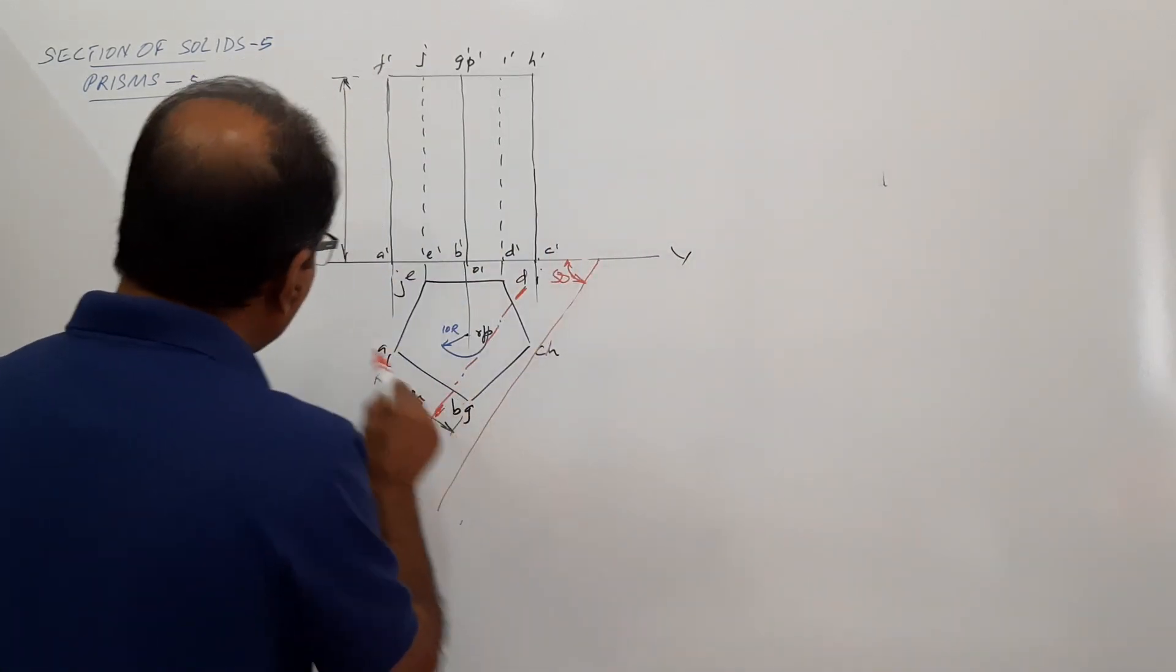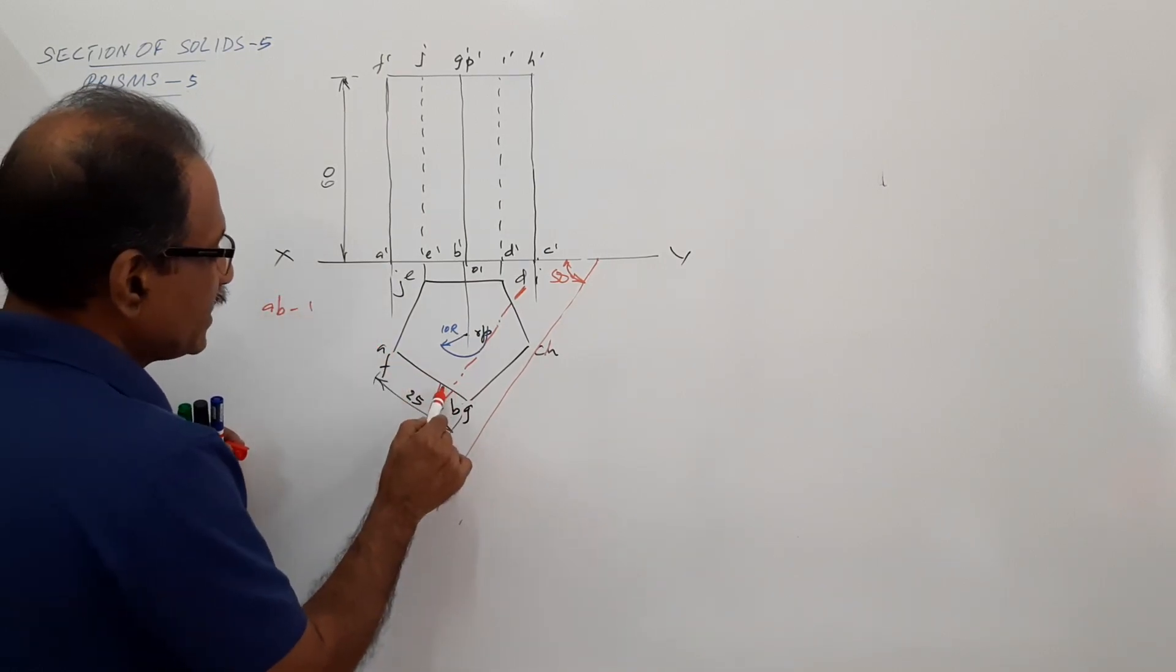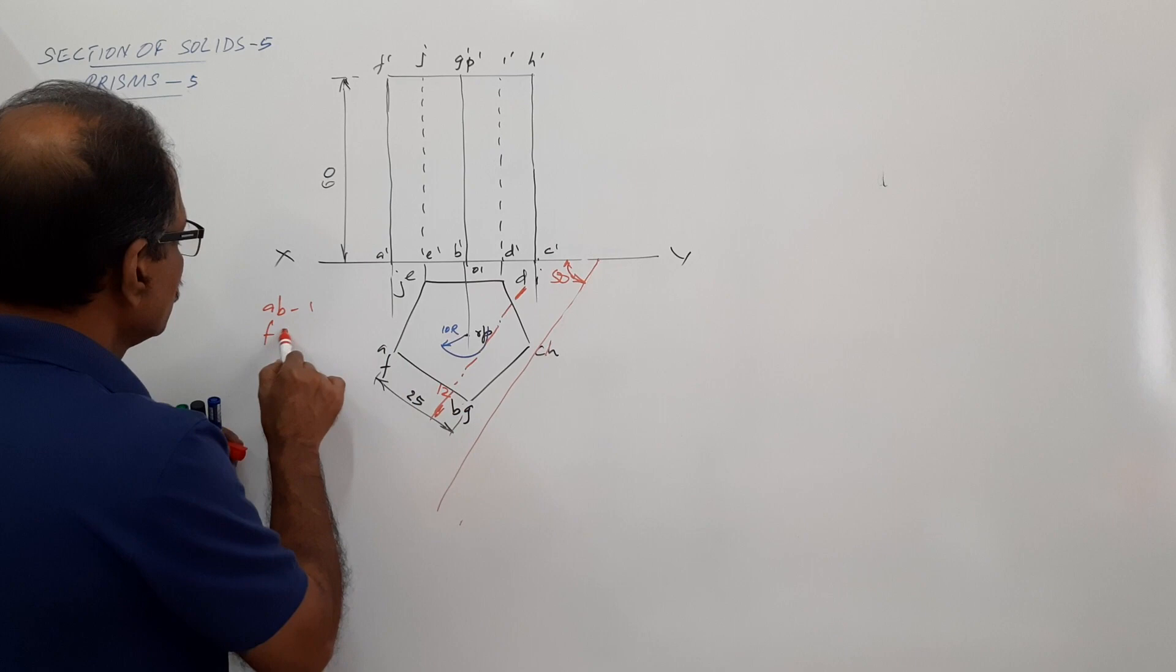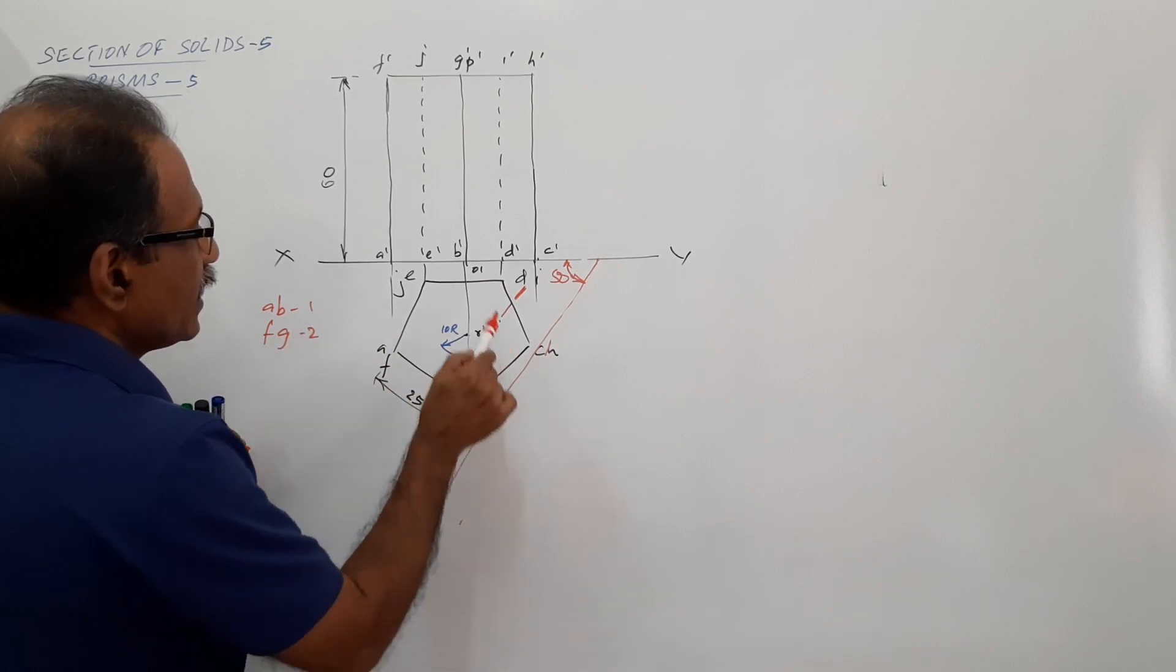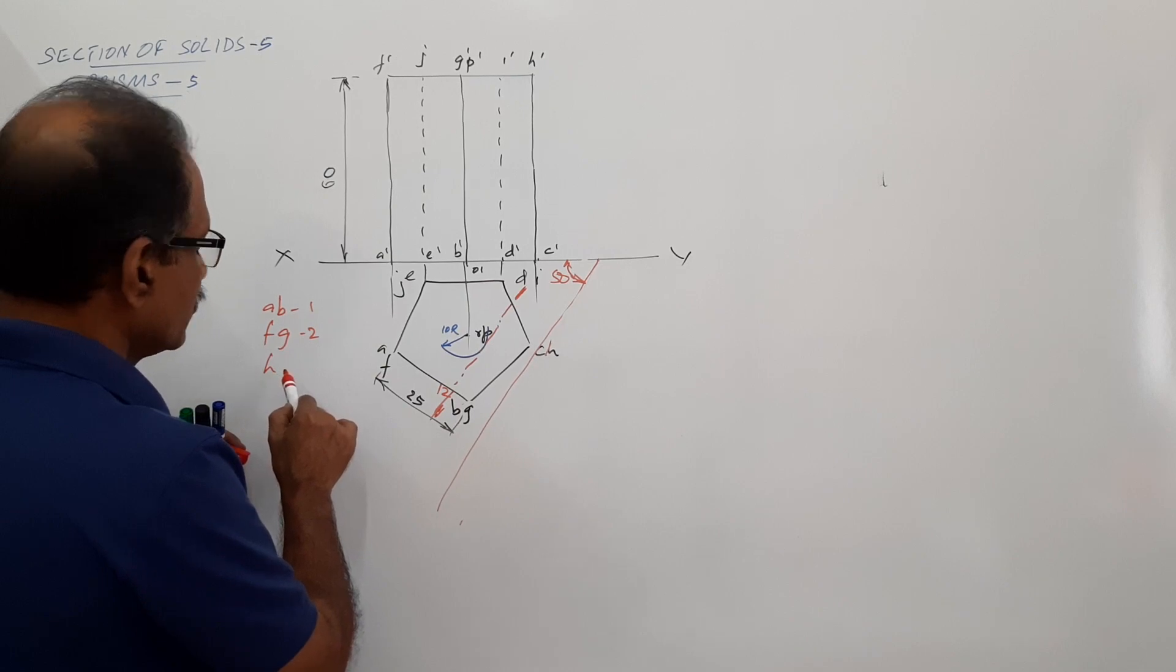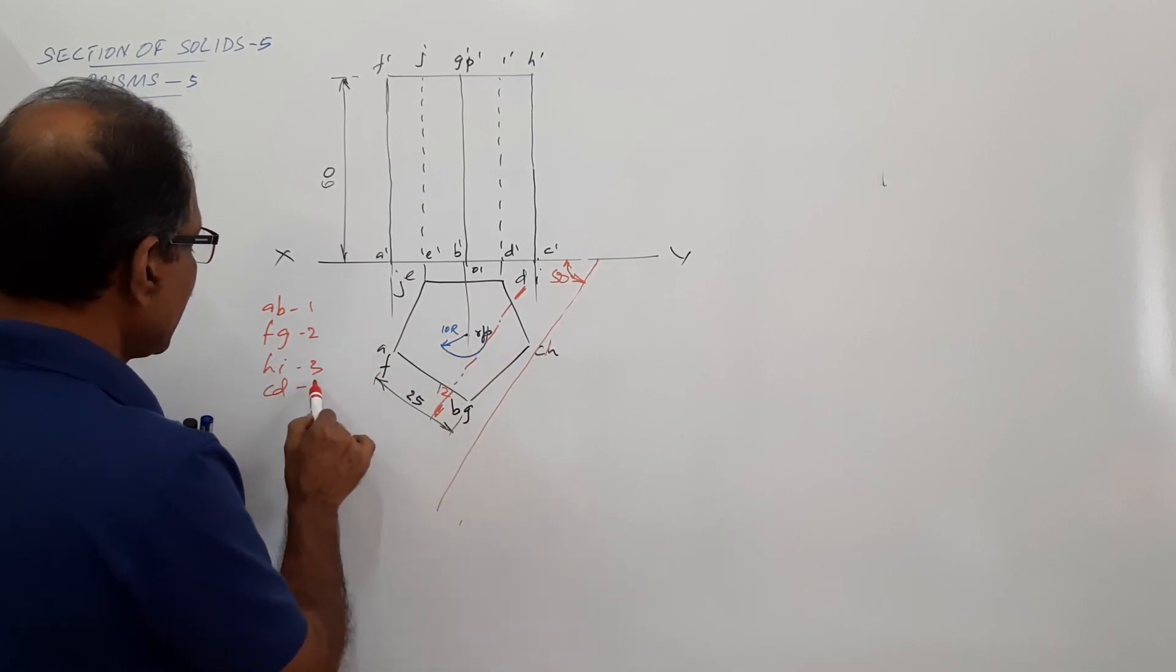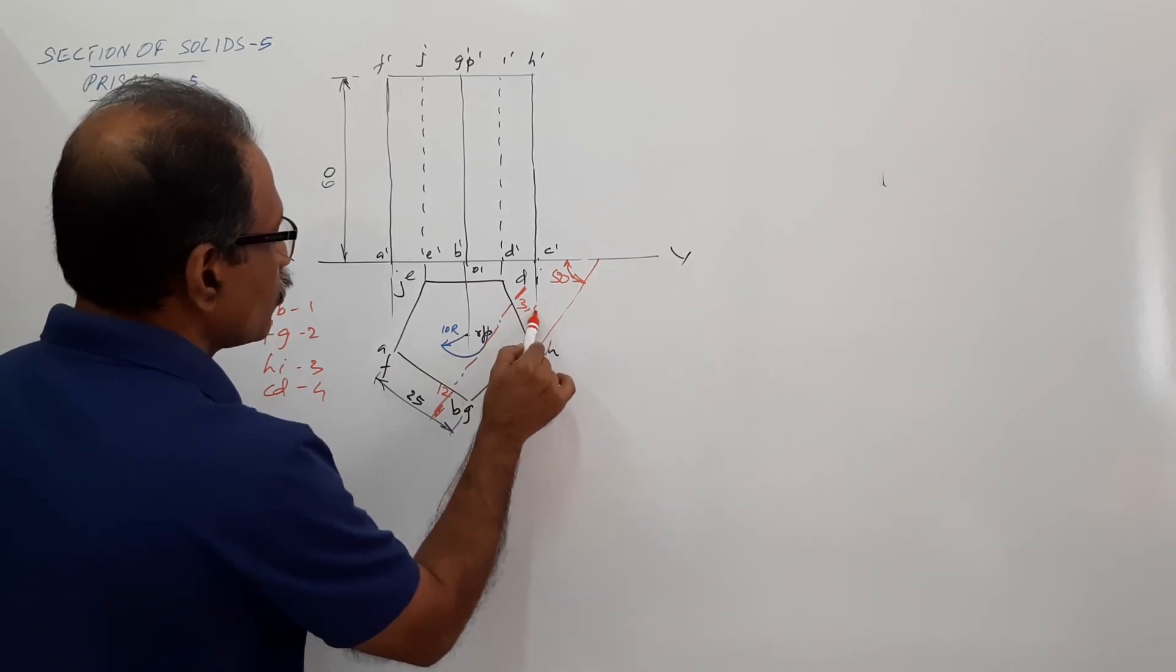Let's mark the points. It cut AB at 1, FG at 2, IJ at 3, and CD at 4.